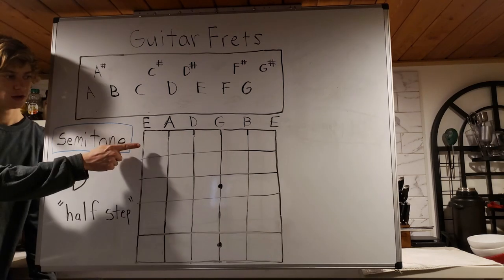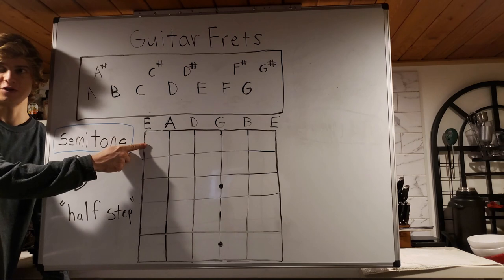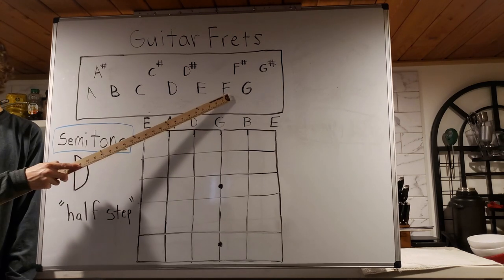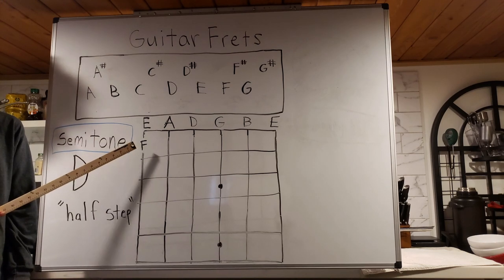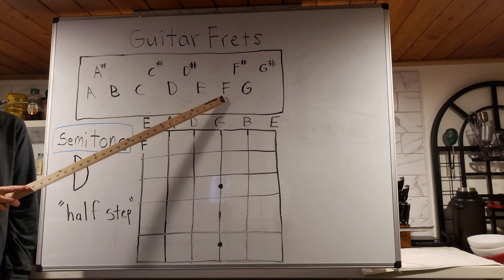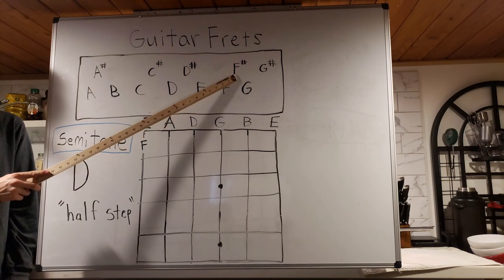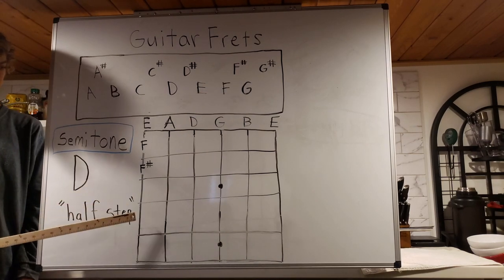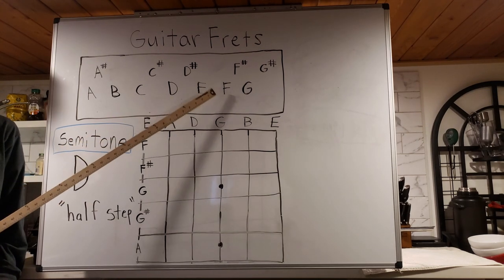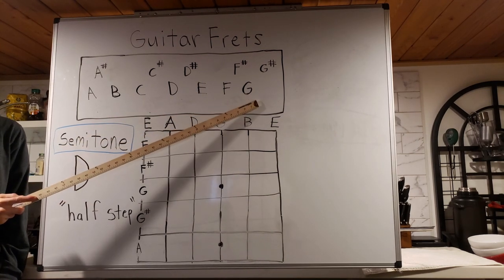So we start on our E string. And as you can imagine, this would be our string. So you'd be putting your finger here. Okay, so what comes after E? Straight to F. So our first fret on the E string is an F note. Continuing to progress up the musical alphabet, we get F sharp and then we just keep doing the same thing. Okay, so there's our E string. And remember B and E don't have sharps. And after G, the alphabet repeats.